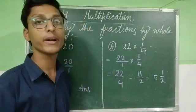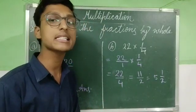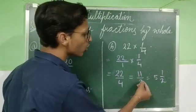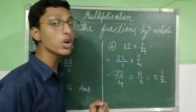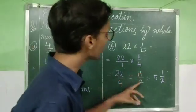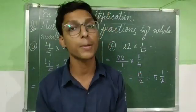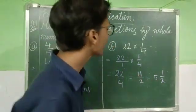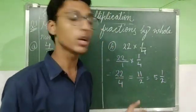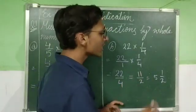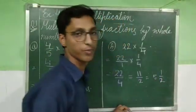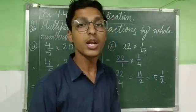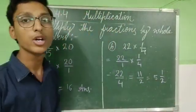22 and 4 — dono numbers 2 ki table mein aate hain. So 2 twos are 4 and 2 elevens are 22; we divide both by 2 to get 11/2. Now 11/2 is not a proper fraction — it is an improper fraction because the numerator is bigger than the denominator. So we divide 11 by 2: the answer is 5 whole 1/2.